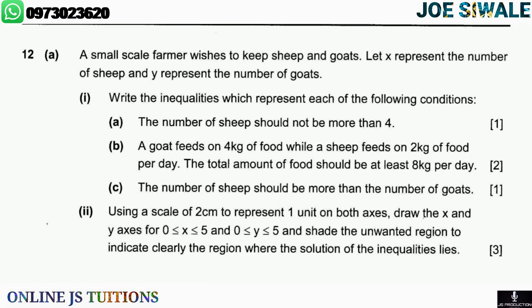Question 12a reads: a small-scale farmer wishes to keep sheep and goats. Let x represent the number of sheep and y represent the number of goats. Write the inequalities which represent each of the following conditions. Condition A: the number of sheep should not be more than 4.